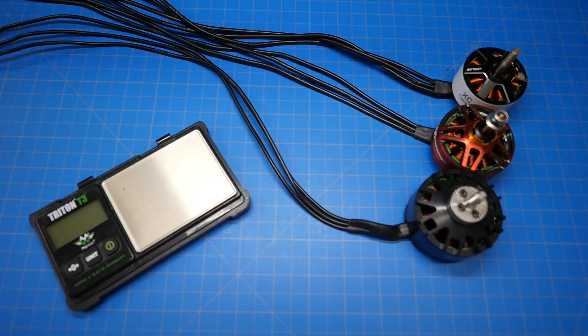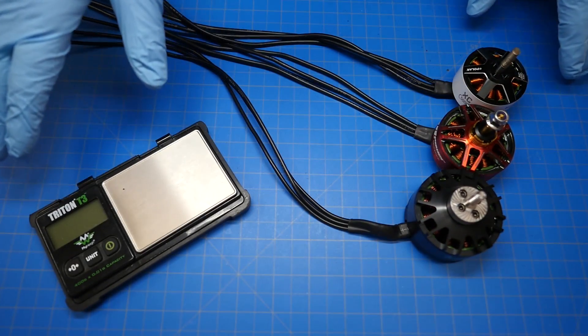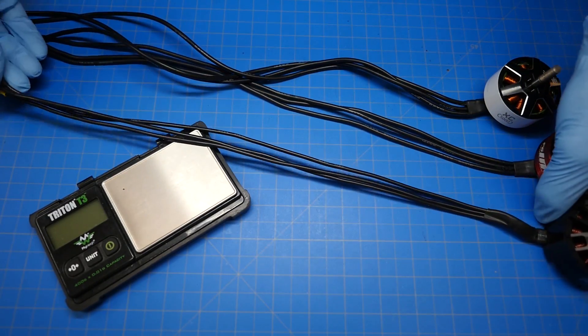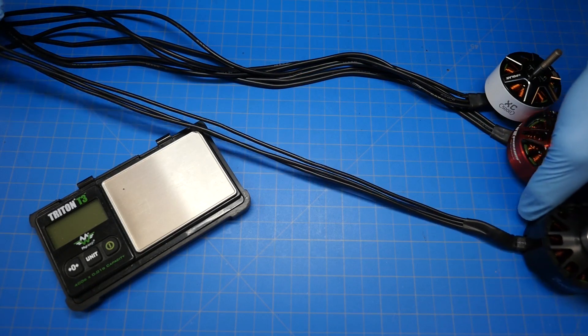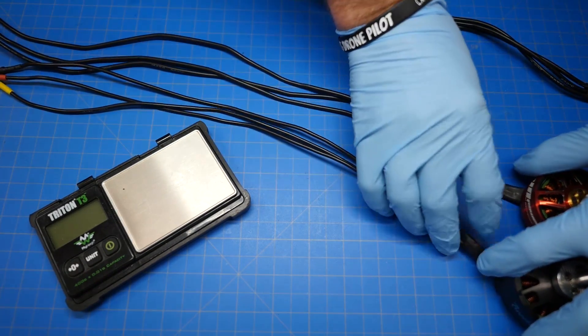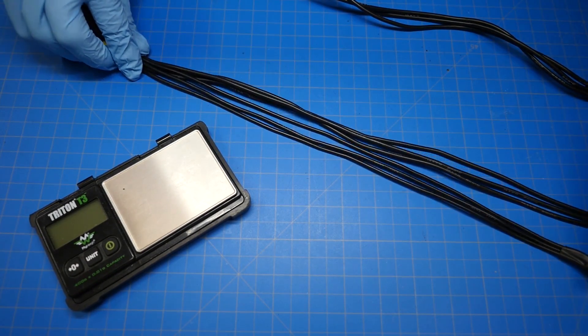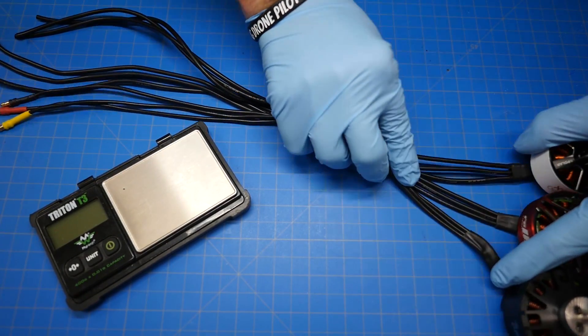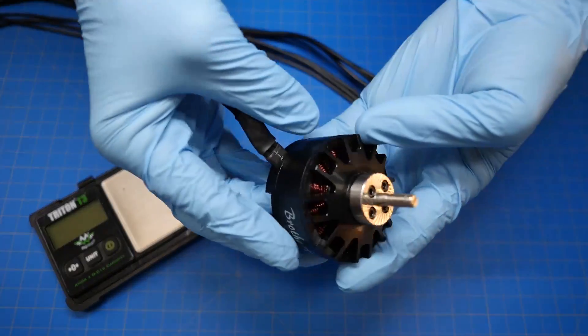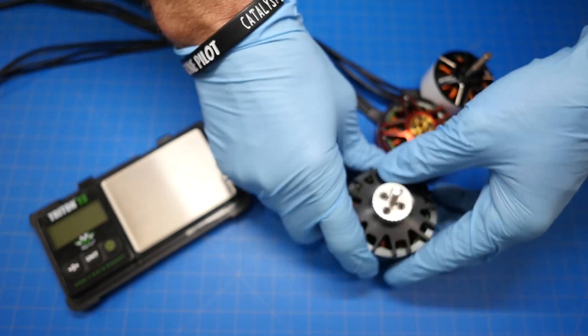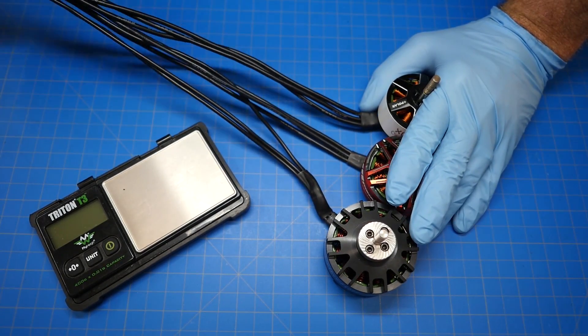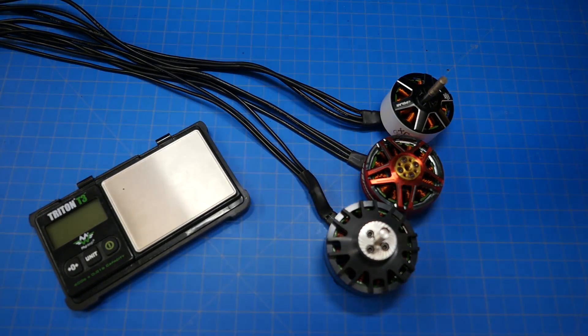So I'm going to go ahead and weigh these motors so we can compare the weight. The reason I've got them all splayed out like this is to show you that I've left the wiring the length that would be needed for an X-Class build. So this is the typical amount of wiring that you would need and I wanted to show you guys that all of these motors have the same length of wire. So that's a very good comparison for the weight of the motor. No, I'm not going to be able to go and get the weight of just the motor because I'm not cutting my wires off. You could do that if you wanted to get the weight of the motor itself, but I'm not going to do that. So we can compare like this. So, yeah, let's go ahead and do that now.